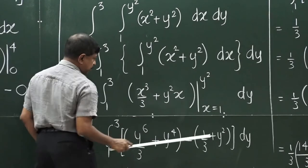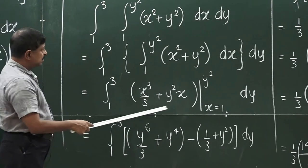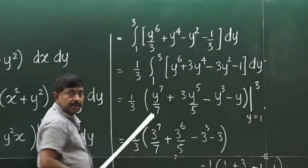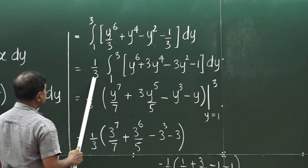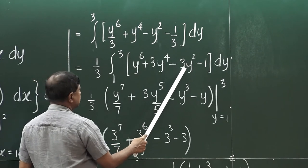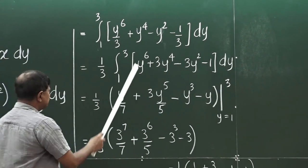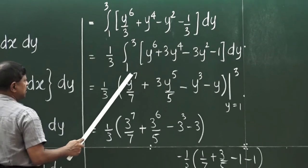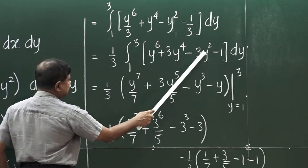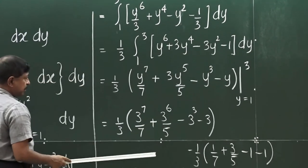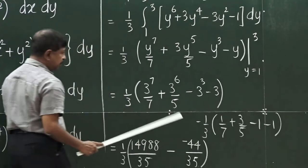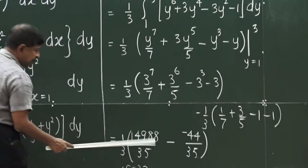Now subtract. After that it is a simple integral. Since you have 3 in two terms, pull it out. So you get one third times (y⁶ minus 3y⁴ minus 3y² minus 1). Now integrate: you get y⁷/7, then 3 times y⁵/5, and so on. Then plug in the limits. When you plug in 3 you get one result, when you plug in 1 you get another. Then simplify them and you will end up with the final answer.